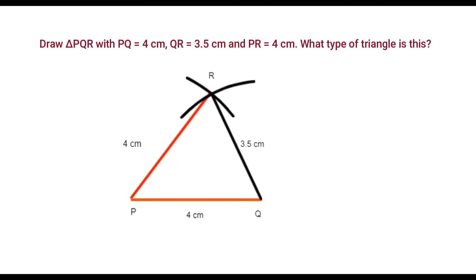In triangle PQR, PQ is equal to PR. Since two sides are equal, it is an isosceles triangle.